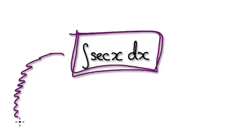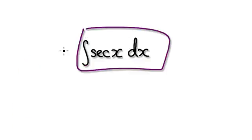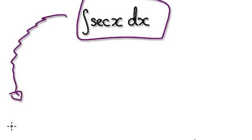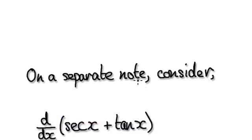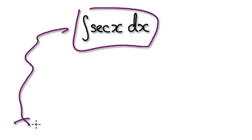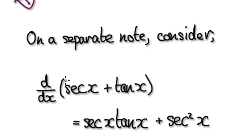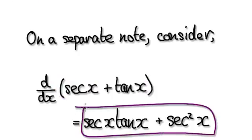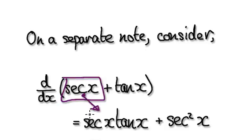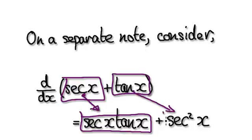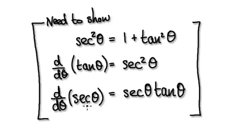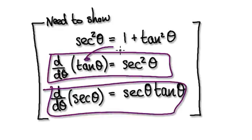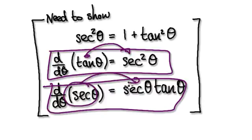We are trying to integrate sec(x), but on a separate note, let's consider something else. When you differentiate this expression, it will give you a certain result. That's really us making use of the fact that differentiating tan gives sec², and differentiating sec gives sec·tan. So that's what we're making use of here.